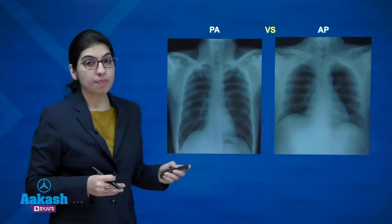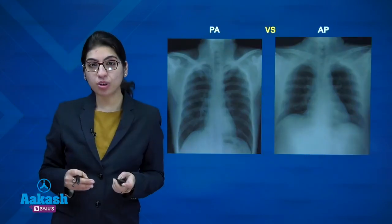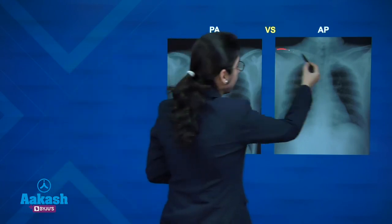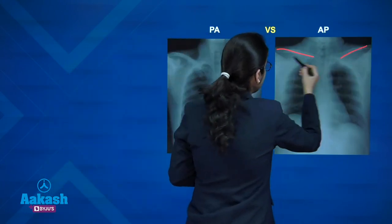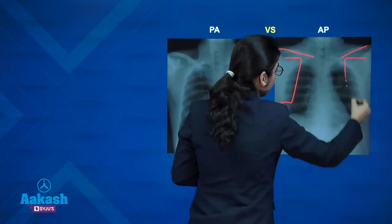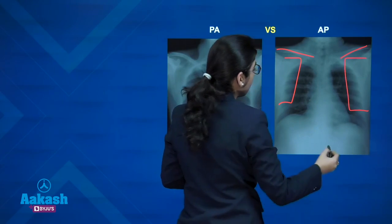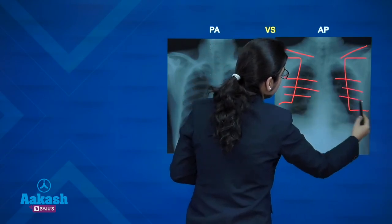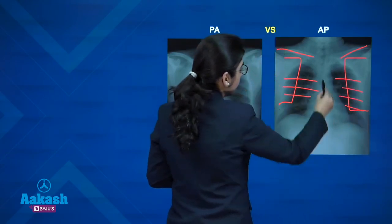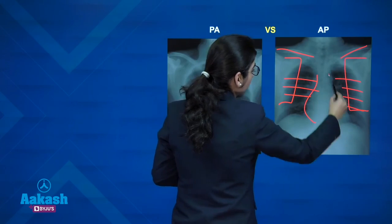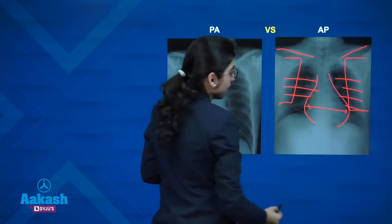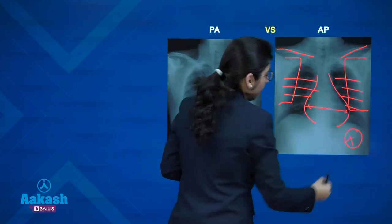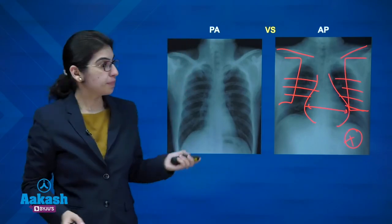PA versus AP view — very important differences. Clavicles are more cranially oriented in AP view. Scapulas are within the lung fields in AP view. Ribs are more horizontally oriented in AP. There is pseudo-cardiomegaly and the fundic bubble is usually not seen.